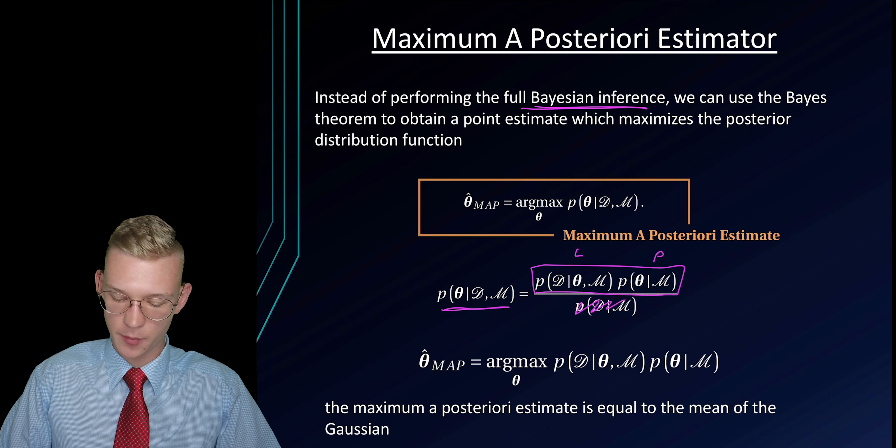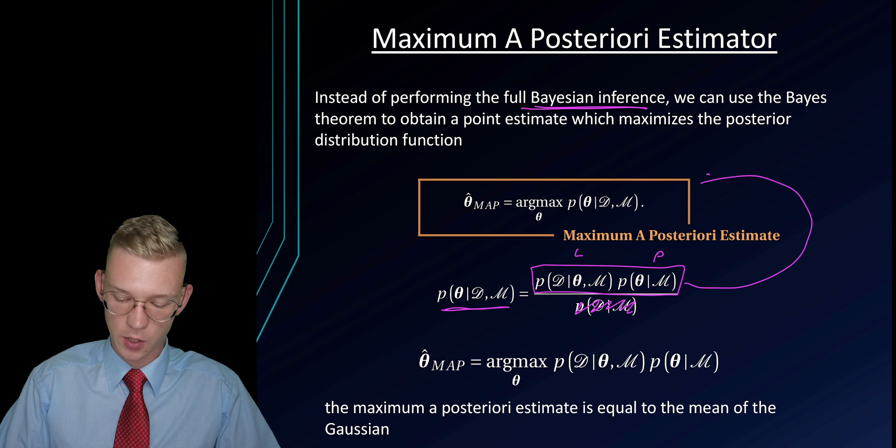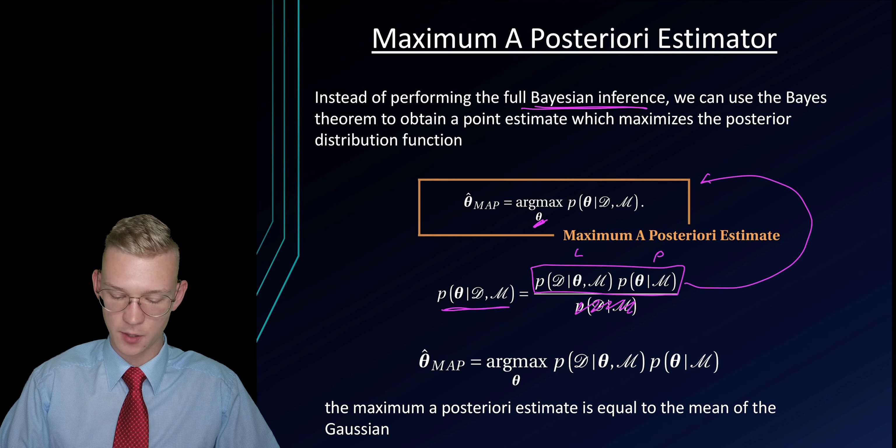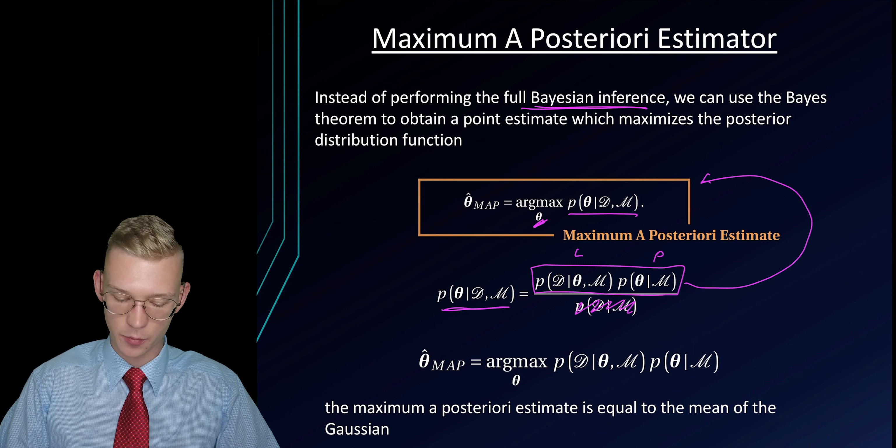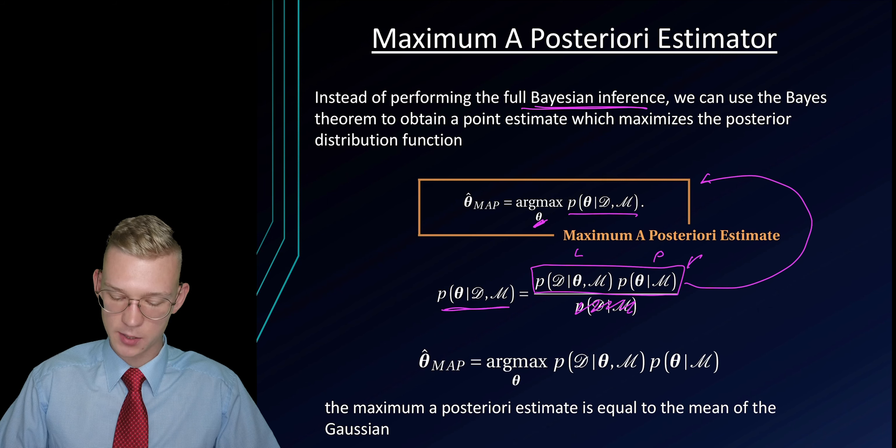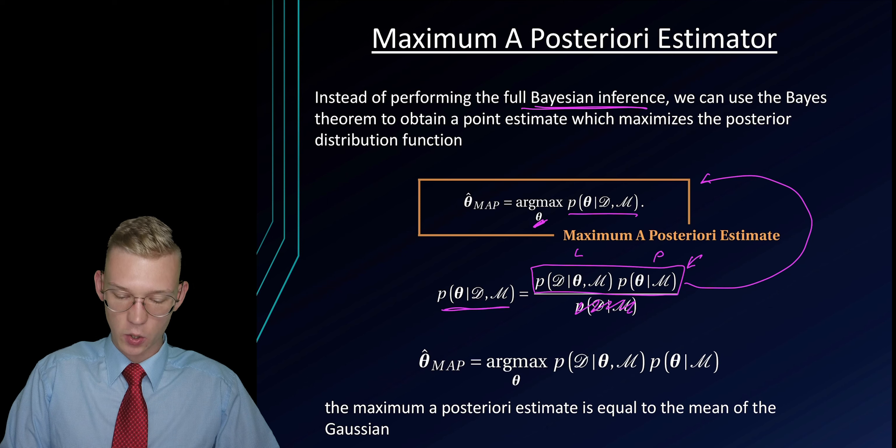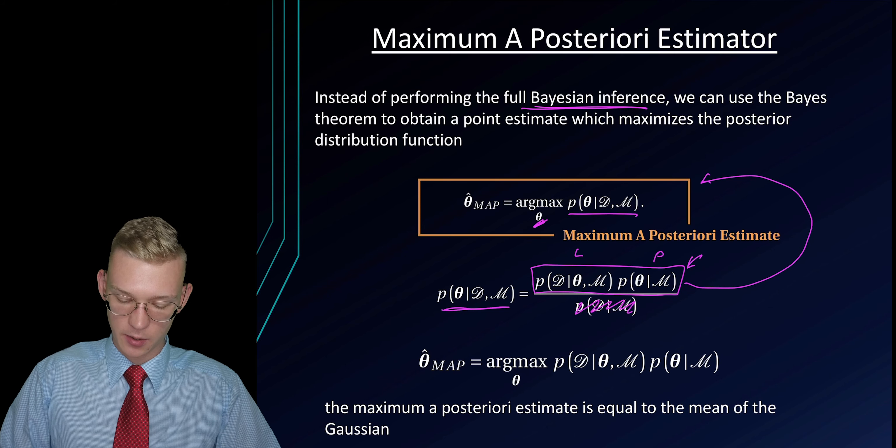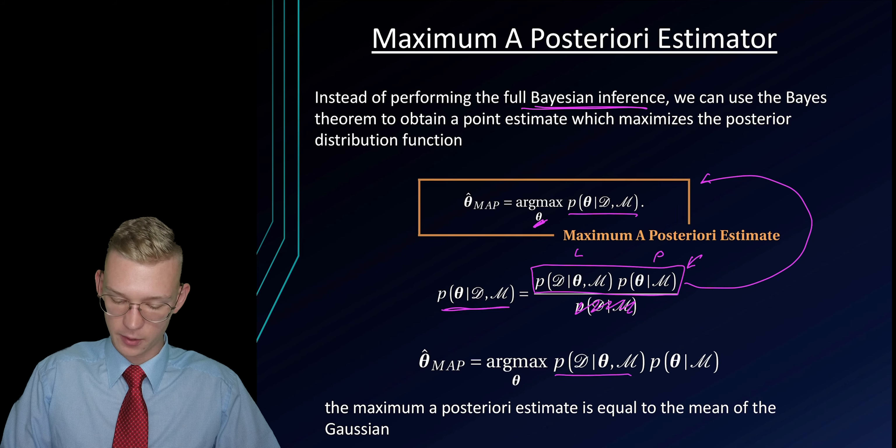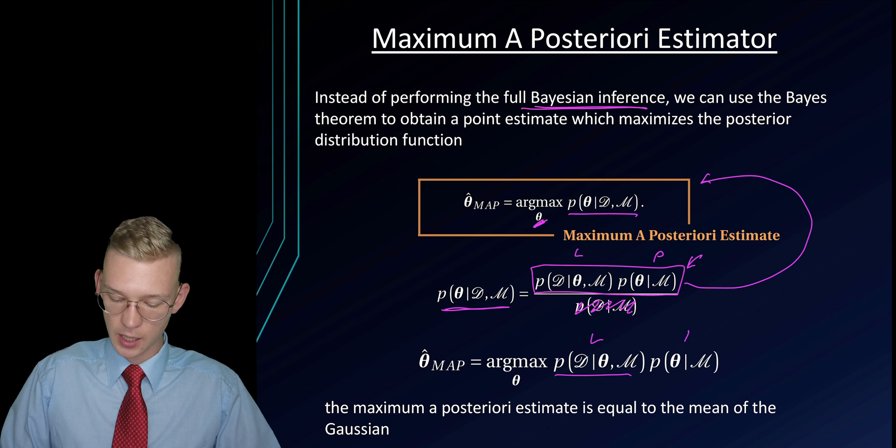We don't care about the normalization constant but we're just interested which parameters theta maximize our parameters, which maximize the top part of our equation. We can say that we are interested in the maximum of the likelihood, which is this one, times the prior.